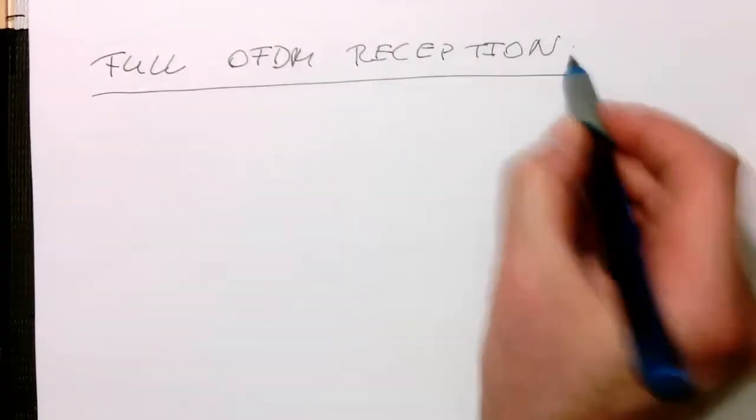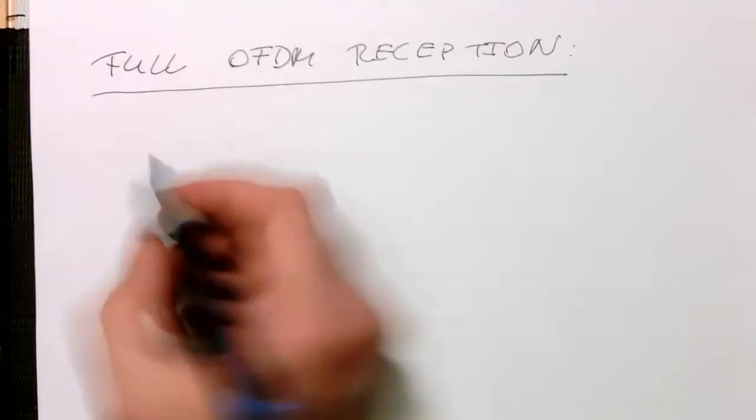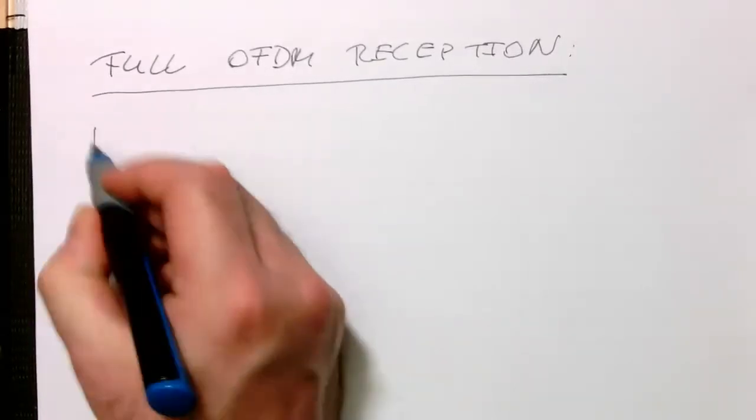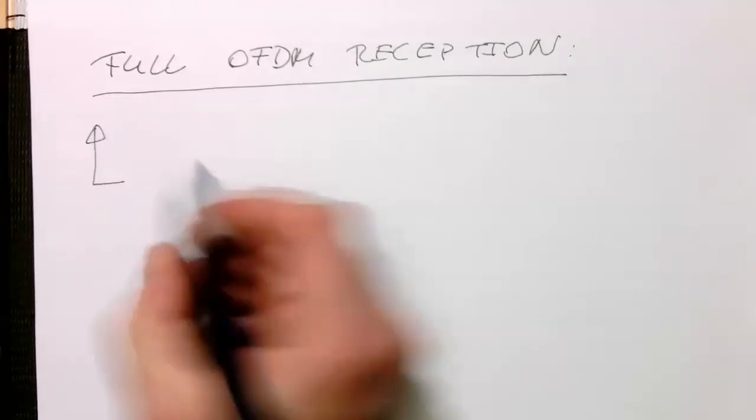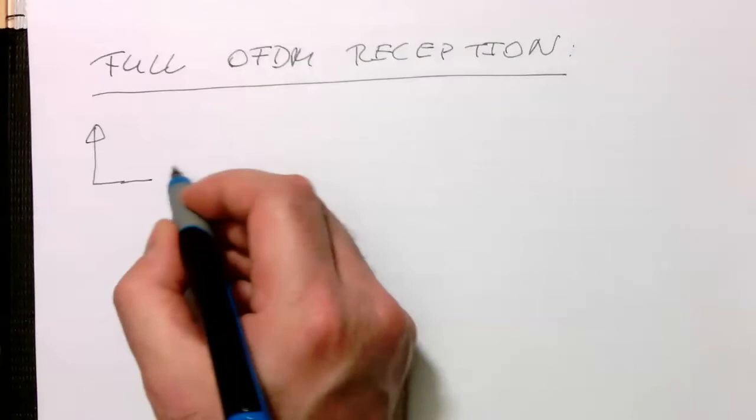Full OFDM reception. And so that's more or less the other way around. So we've got our antenna here, and then the first thing is here the cyclic prefix detection.